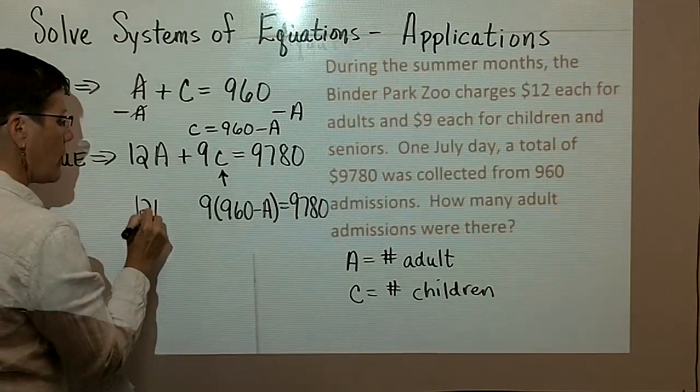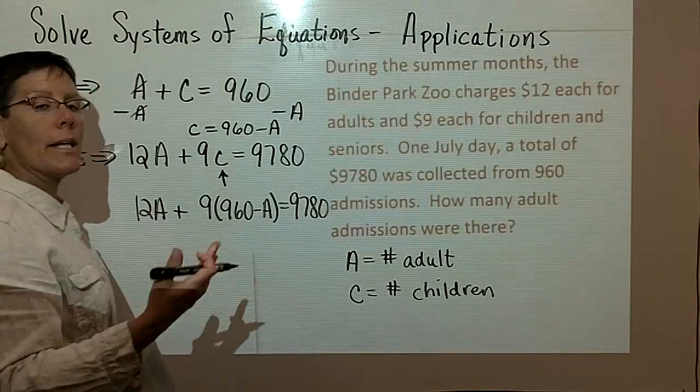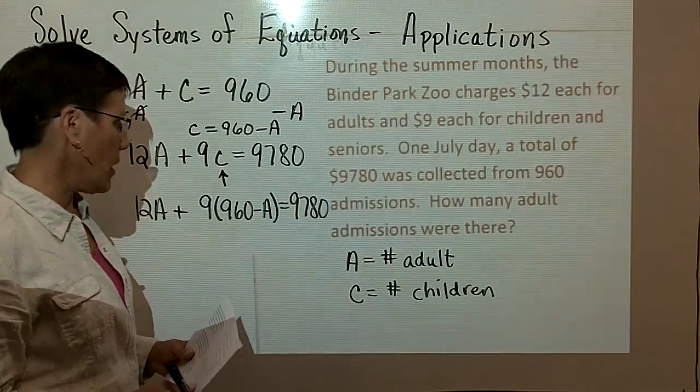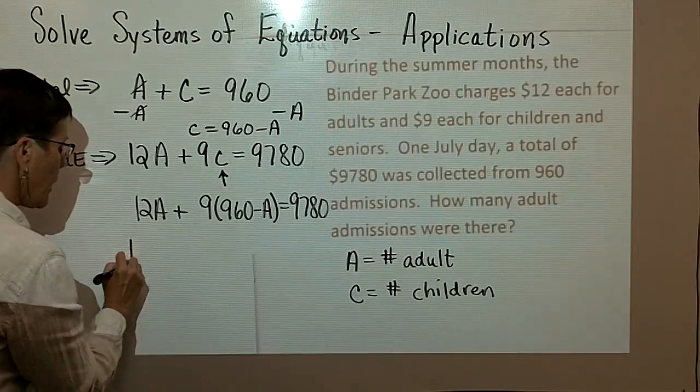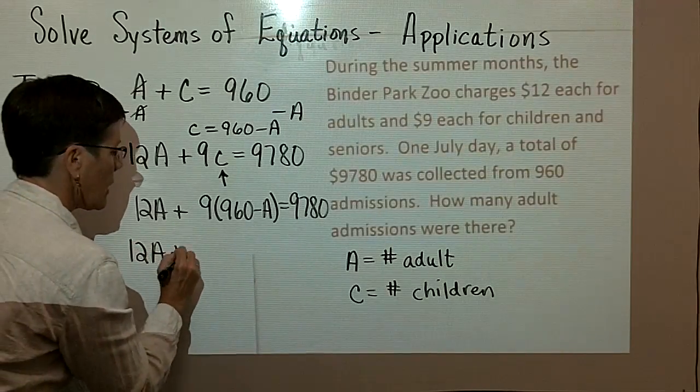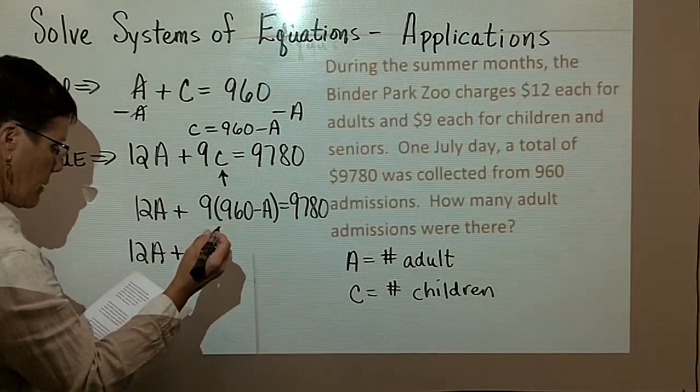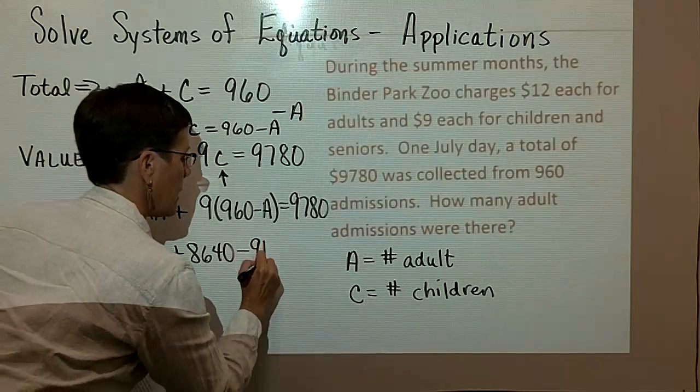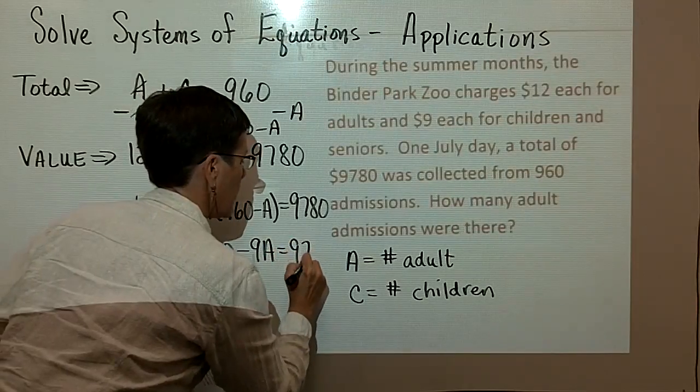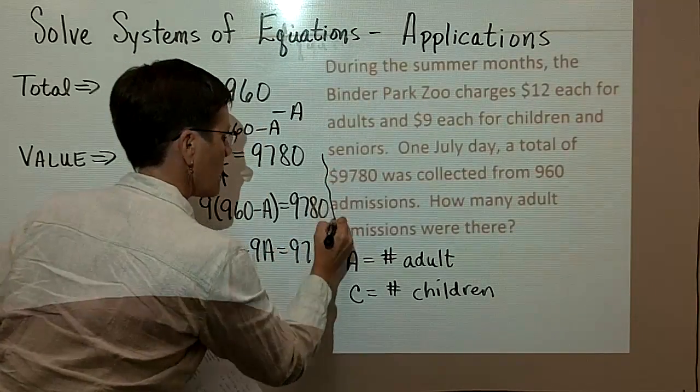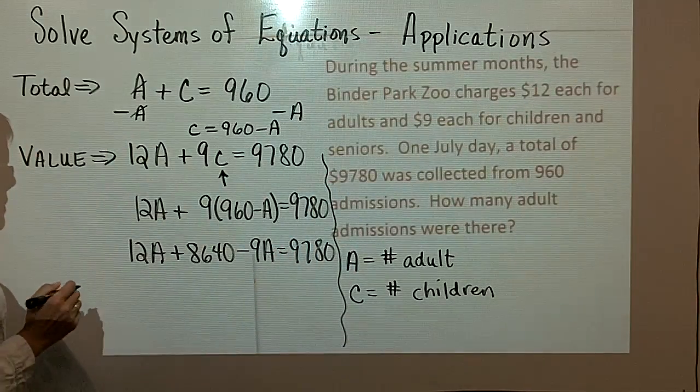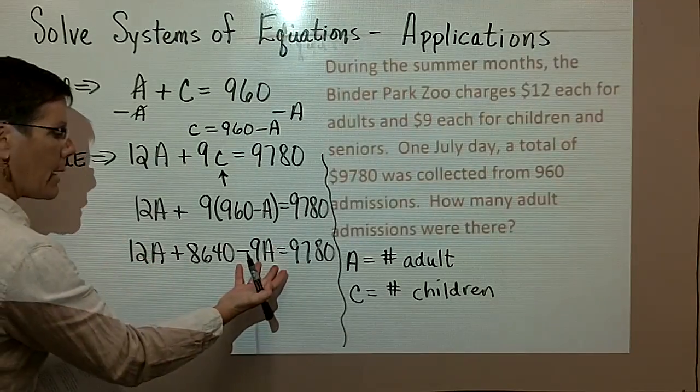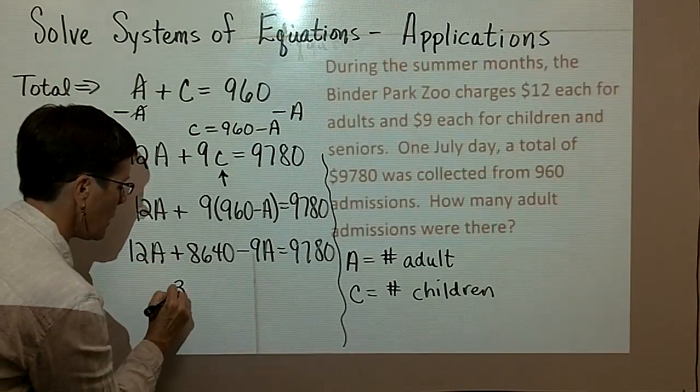And then I can't forget this 12A over here. I'm ready to solve this equation for adults. So I have 12A plus 9 times 960 is 8640, minus 9A equals 9780. 12A minus 9A is 3A.